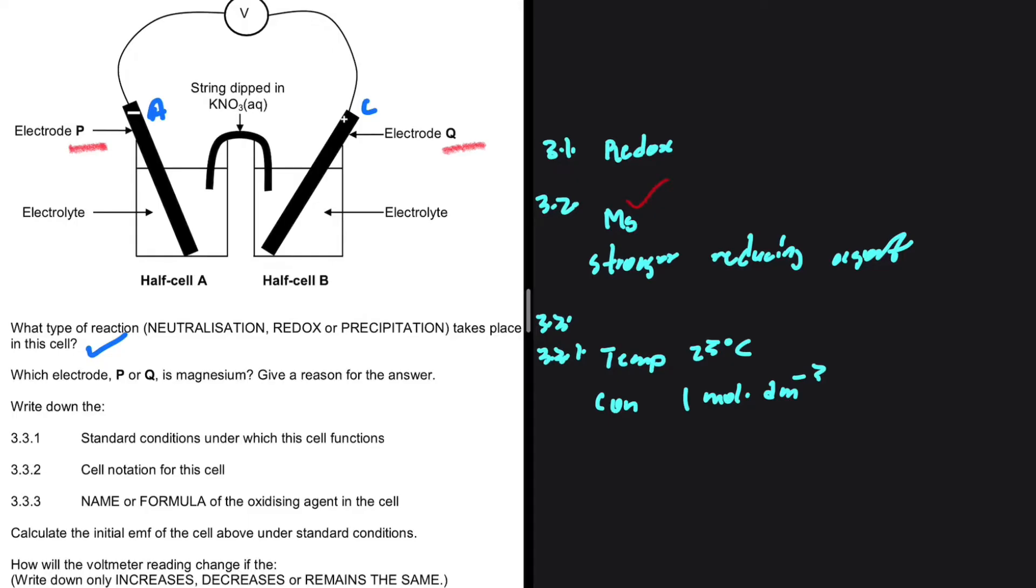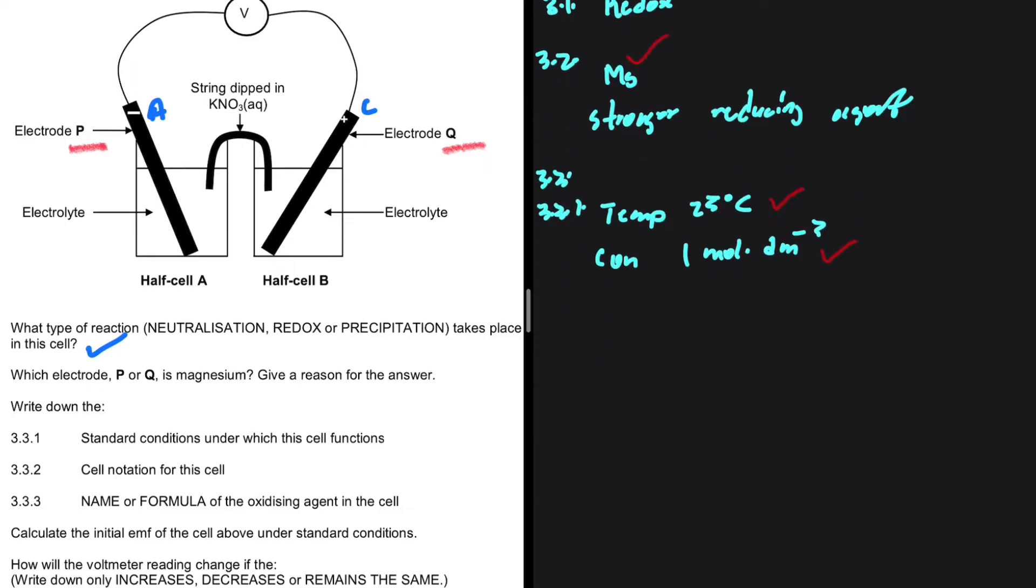That is because we don't have any gas. So in this cell, we're supposed to only mention temperature and concentration. That is another trick you have to be aware of.